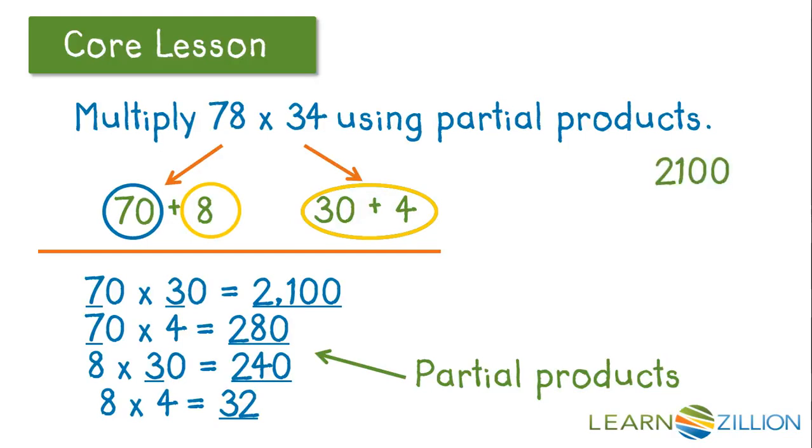We'll add these numbers together. We have 2100, 280, 240 and 32 to get our final product of 2652. 78 times 34 is 2652.